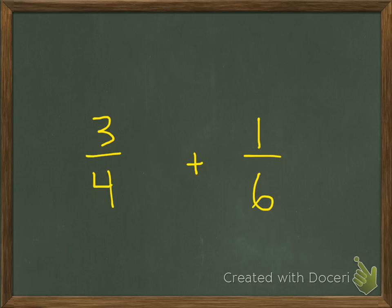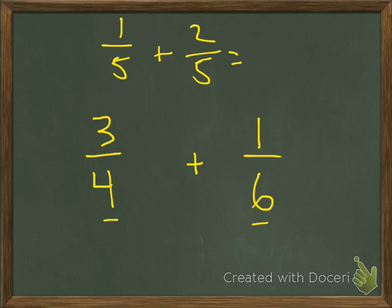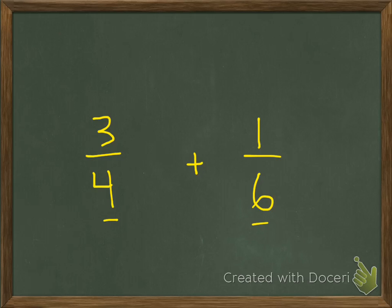Even though in Lesson 6.4 we're not actually adding fractions, I want to show you one last example so you understand why we're doing this. We have three-fourths and one-sixth, and we need to add them. The problem is these fractions don't have the same denominator. When fractions have the same denominator, like one-fifth plus two-fifths equaling three-fifths, it's simple — but it doesn't work the same way with different denominators. Using the skill we just covered, we can make equivalent fractions with the same denominator and then add them.